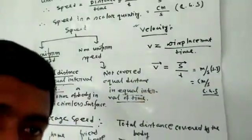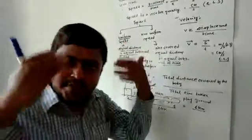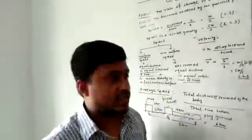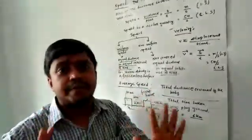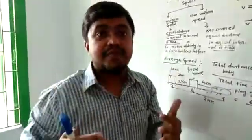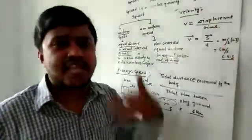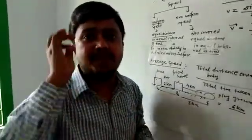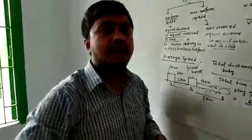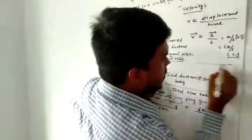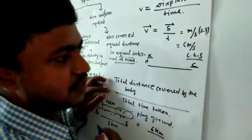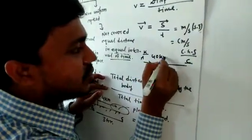The key difference between speed and velocity is: speed is the rate of change of distance, velocity is the rate of change of displacement. Speed is a scalar quantity and velocity is a vector quantity. Speed can never be zero or negative, but velocity can sometimes be positive, sometimes negative, and sometimes zero — because displacement is a vector quantity, so it has both magnitude and direction.